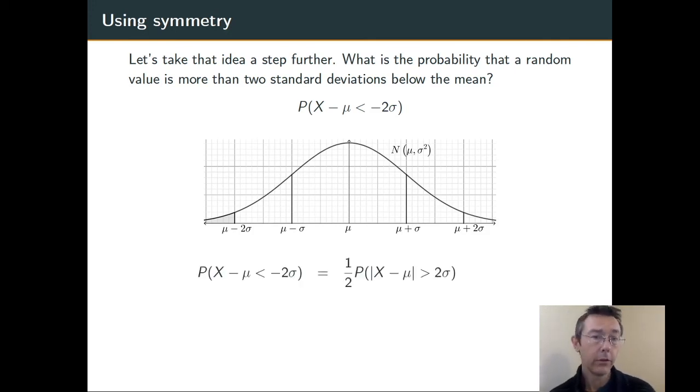So, the way I'm going to do this is I'm going to think about that shaded region as being one half of the region that is more than two standard deviations away from the mean. So, basically, take that shaded region on the left and copy it over there on the right at μ + 2σ.